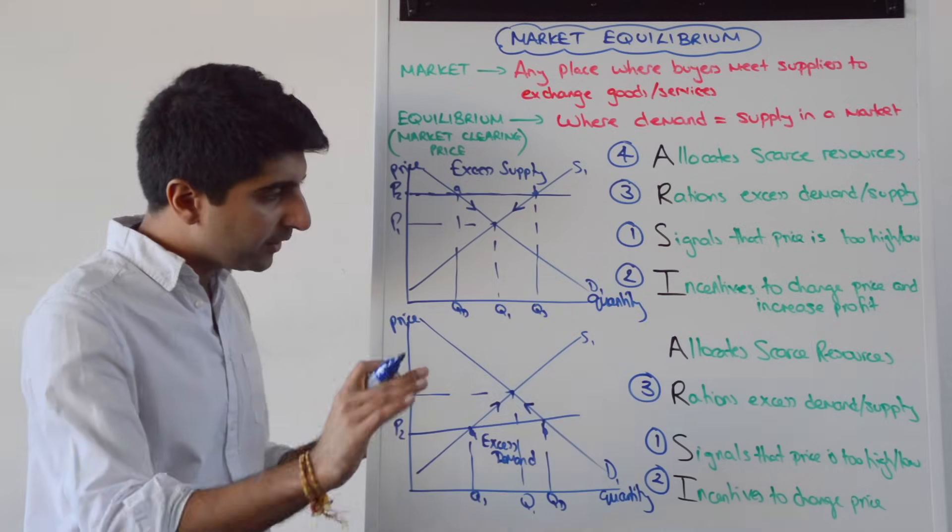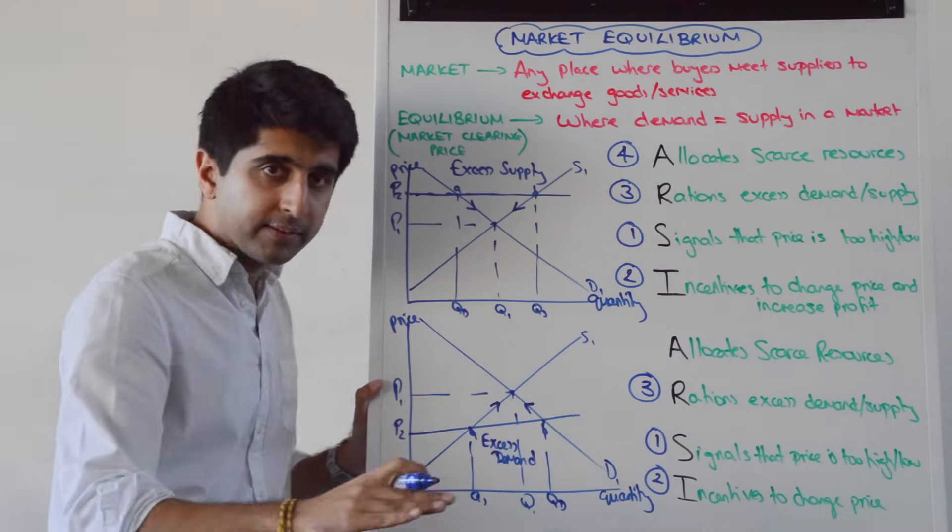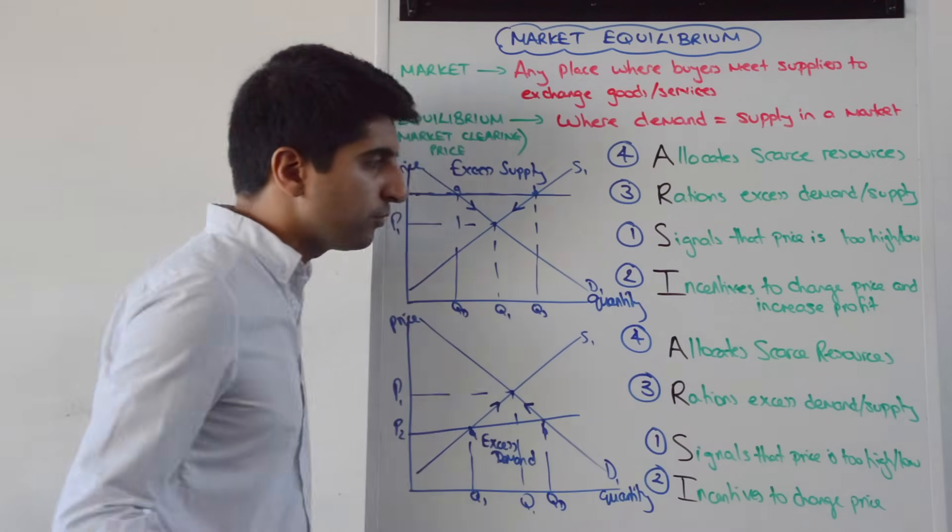We end up at P1 and Q1. Perfect equilibrium. No excess demand. No excess supply. We now have a perfect allocation of scarce resources.